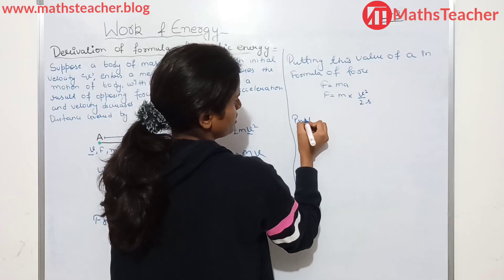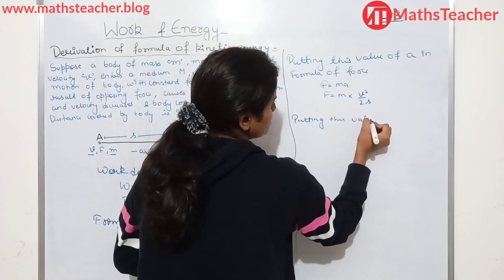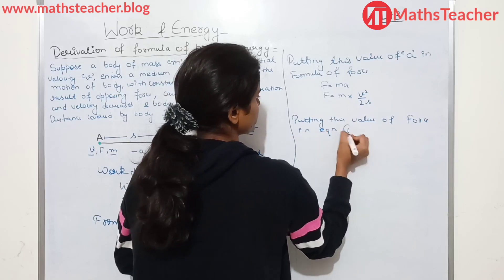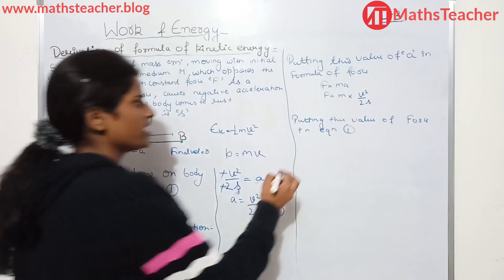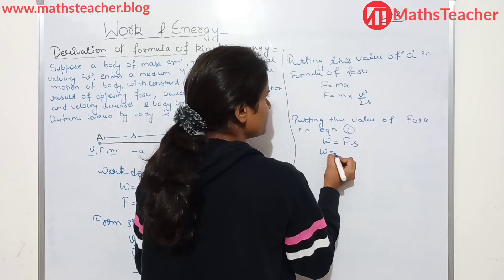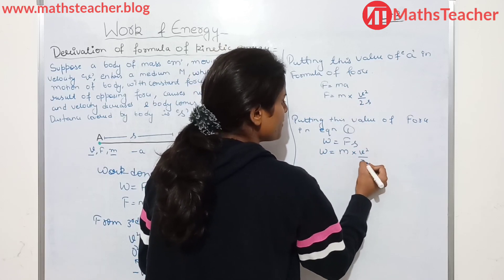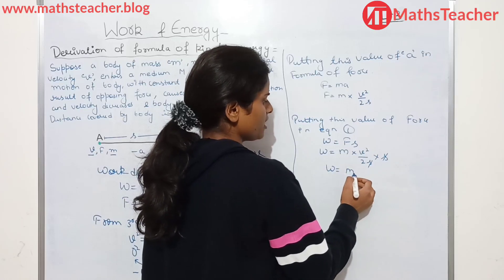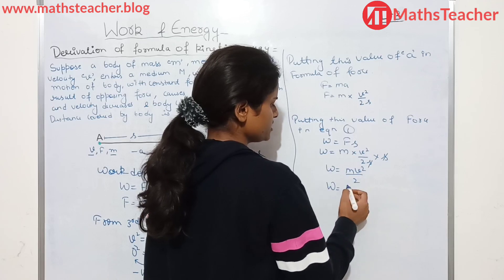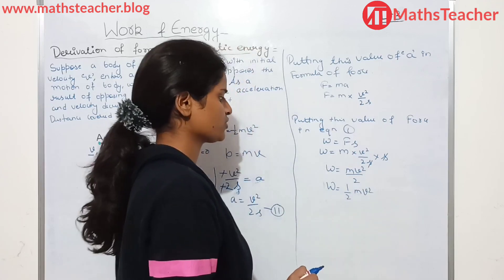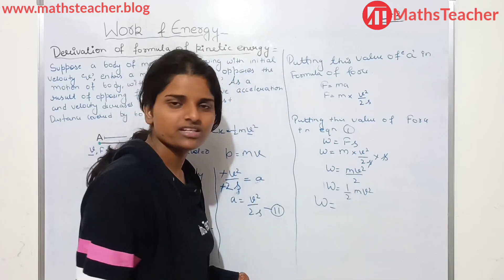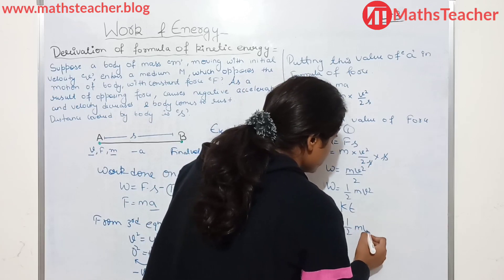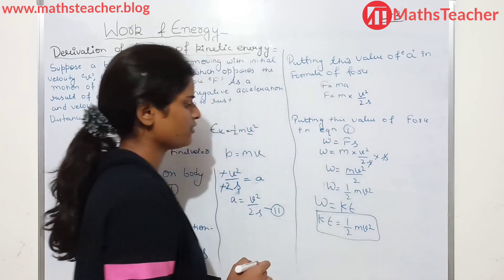Work done is half mv². And we know that work done is equal to energy. We are talking about kinetic energy. So kinetic energy = half mv². That is a very, very important derivation and a very, very important formula, because there will be many numericals to solve.